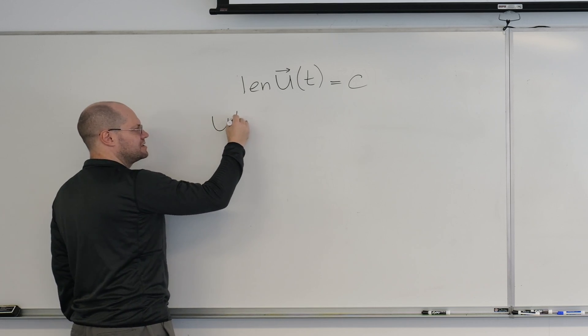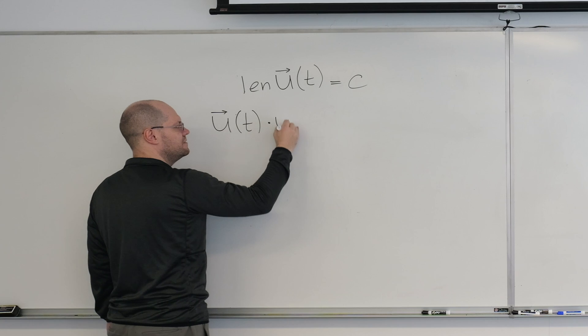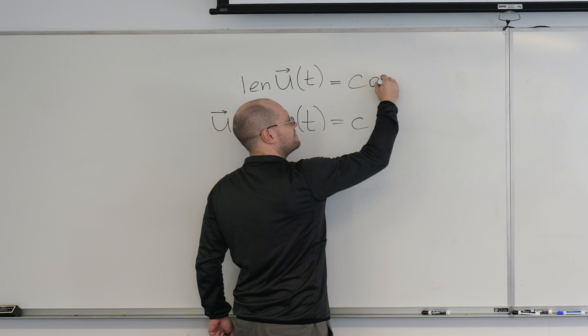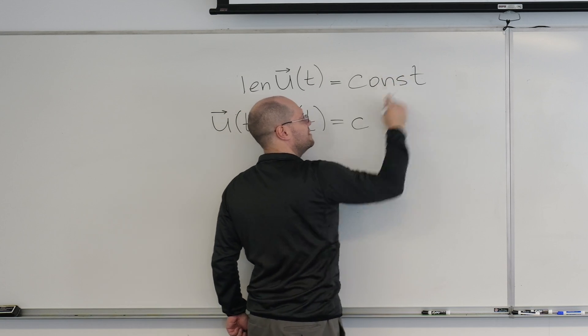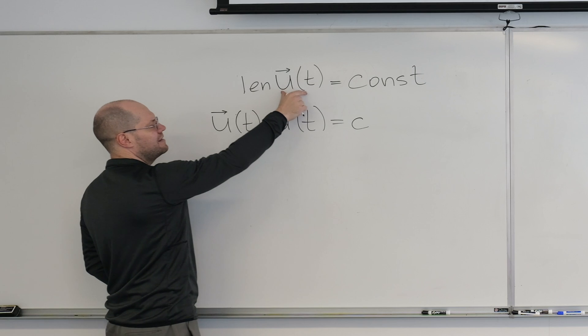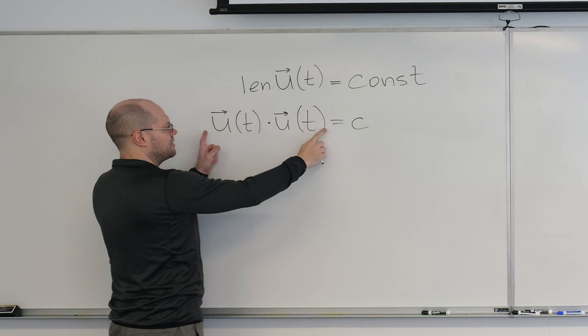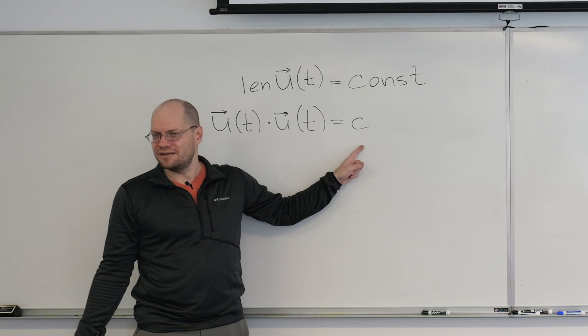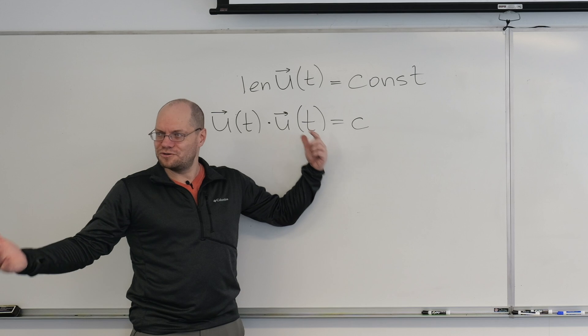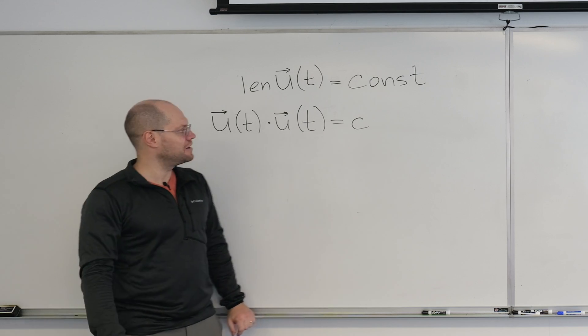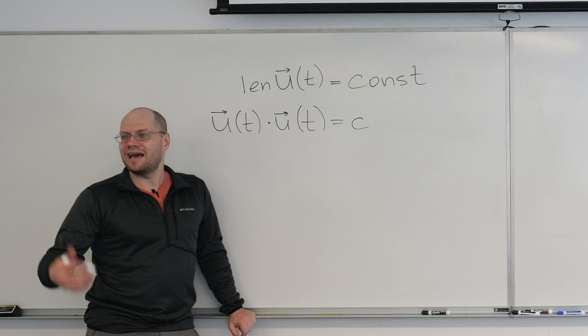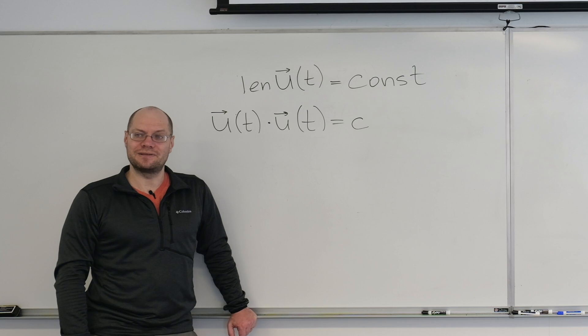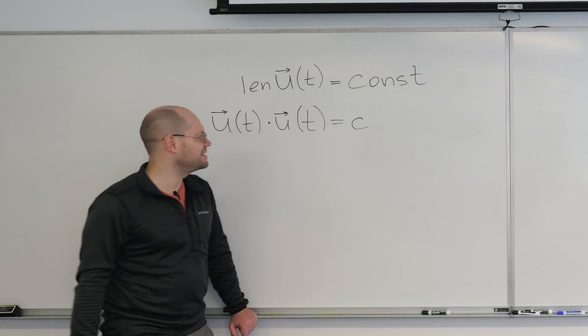Well, we say that u dotted with itself. I should really write c squared if it's the same constant, but I don't want to write c squared. So let's just c be the constant that equals this. If the length is constant, this represents the length squared, so the length squared is constant. Let's denote that constant by c. And now we'll use the only available operation at our disposal that makes sense in this context, and that's the derivative. We're going to take the derivatives of both sides. And this cannot be complicated, and it won't be complicated. Let's see what we get.